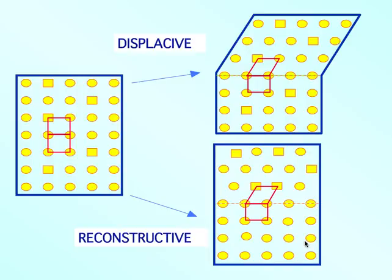For a diffusion jump you need to get over a barrier, but you also need an empty site — you need to create a vacancy next to your jumping atom. That's not the case for interstitial atoms and they can move quickly. So, is it possible that when we have atoms in interstitial sites, you can get a displacive transformation which is controlled by the diffusion of interstitial atoms?